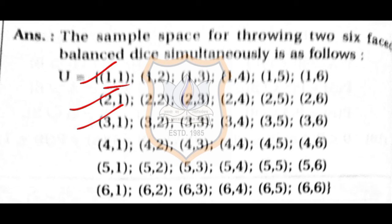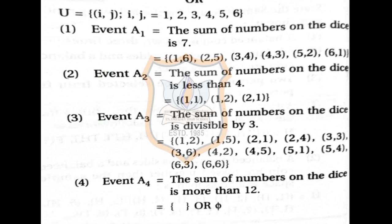Event A1 — sum equals 7: The pairs are (1,6), (2,5), (3,4), (4,3), (5,2), (6,1). So there are 6 sample points where the sum is 7. This is Event A1.